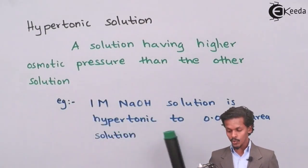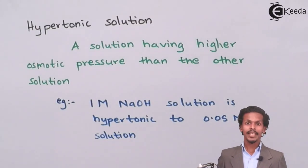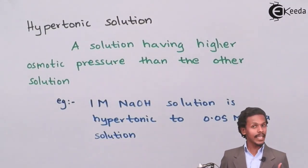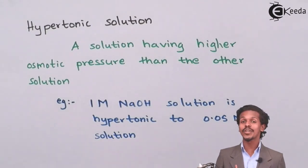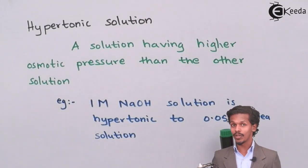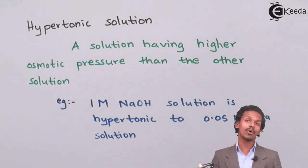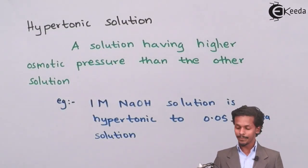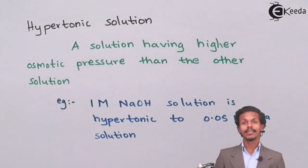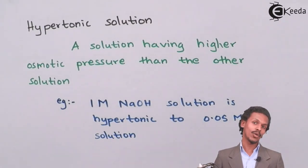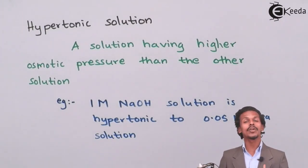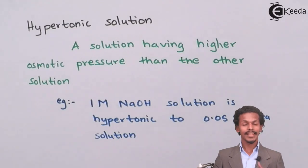An example: 1 molar NaOH solution is hypertonic to 0.05 molar urea solution. Both chemicals are different, and the concentrations are also different. One is 1 molar while the other is 0.05 molar. This means NaOH has higher concentration than urea, so the osmotic pressure of 1 molar NaOH will be greater than that of 0.05 molar urea solution.